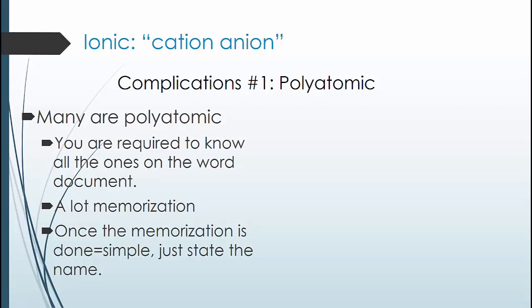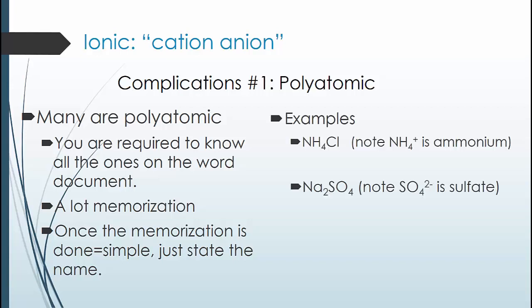Let's do two examples. Because you don't have them all memorized yet, I'm going to tell you the name of the polyatomic ion. For the first one, we have NH4Cl. I tell you that NH4 is ammonium. Pause and try to name this before moving on. This becomes ammonium chloride, just like in our potassium chloride example.